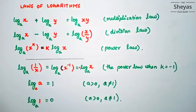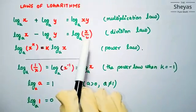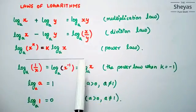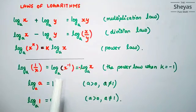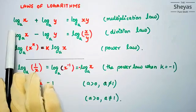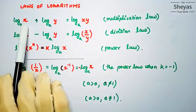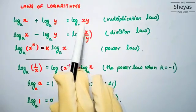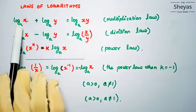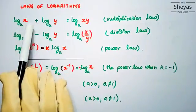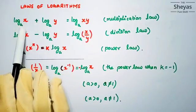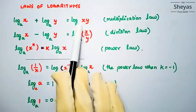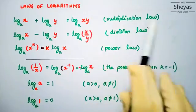Today we are going to discuss laws of logarithms and problems using them. In our previous videos we covered the basics of logarithms. The first law is: log base a of x plus log base a of y is equal to log base a of xy. When logs are in addition they become multiplication, so we call this the multiplication law.